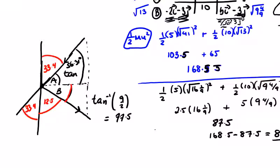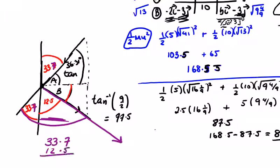The change in direction is from the initial direction to this new direction. These two angles contribute: 33.7 and 12.5. Adding them gives 46.2 degrees as the change in direction.